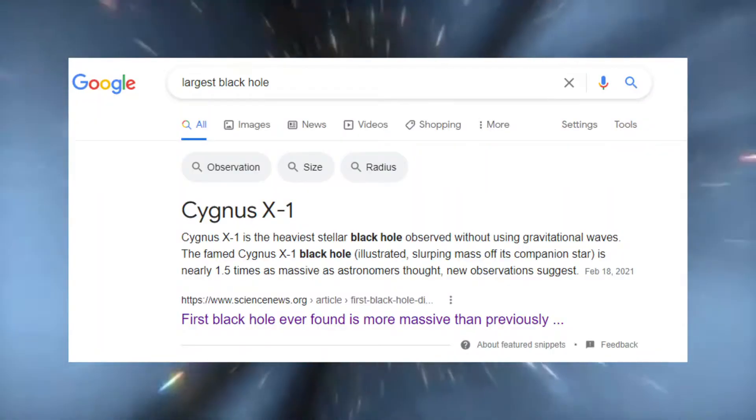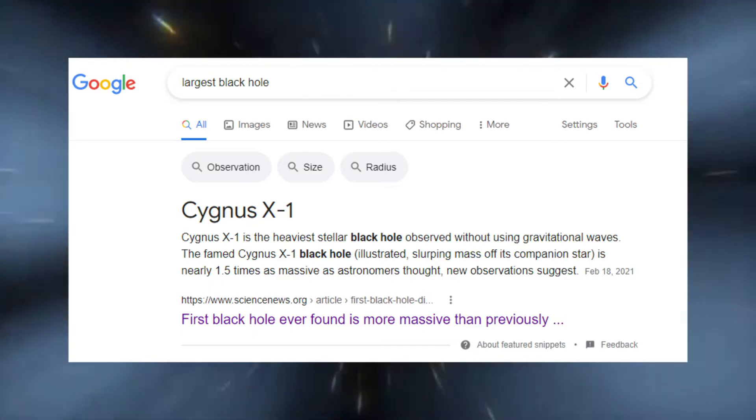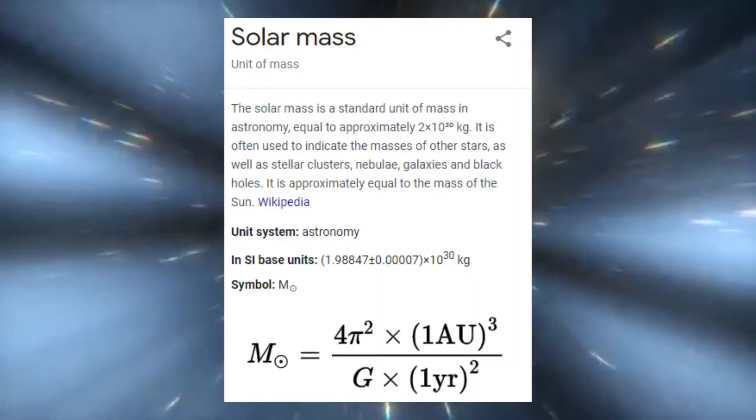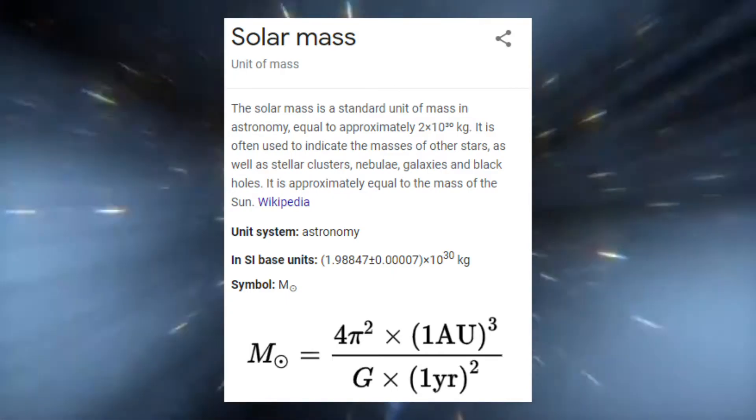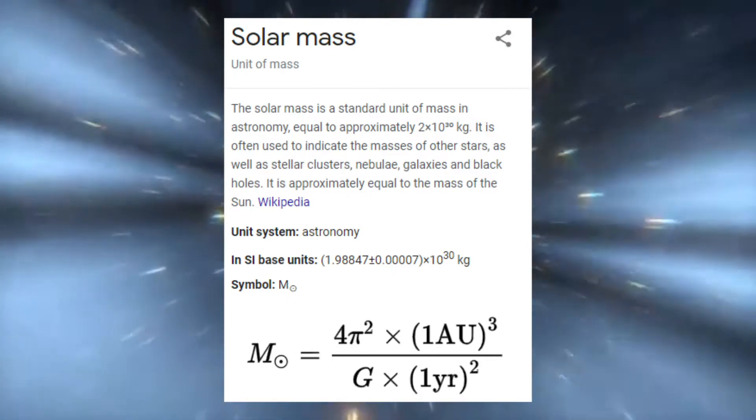Sitting about 7,200 light years away from Earth, Cygnus is also the largest black hole known to man. So there's this thing called solar masses, and it's what scientists use to calculate the weight of humongous things in outer space. And it is said that Cygnus is roughly around 21 solar masses.